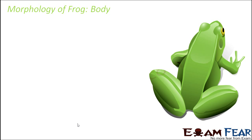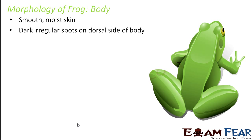Let us start with the morphology, beginning with the body of a frog. They have smooth, moist skin — if you touch a frog, you will find it slimy and smooth. However, they have dark, irregular spots on the dorsal side of the body. These spots are normally absent towards the ventral side, that is, the belly region. The spots are present only on the dorsal side.